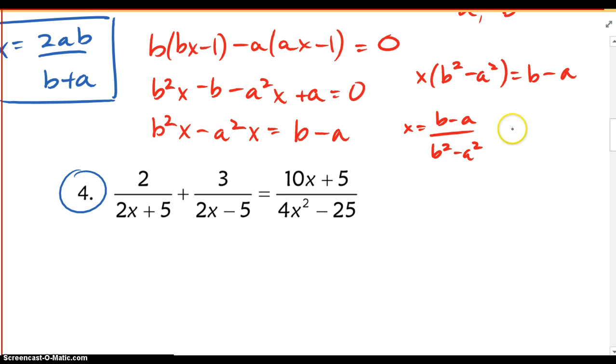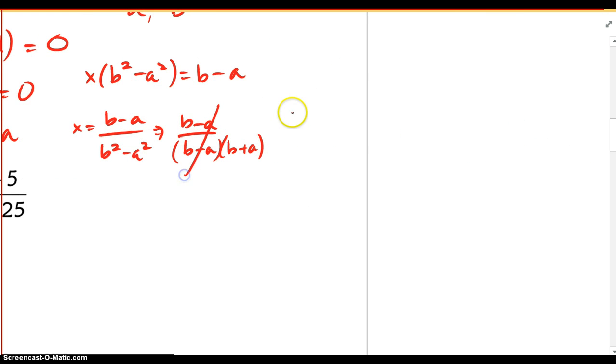And I don't actually want to stop here, because if I notice this, I can actually factor this difference of squares. So I'm left with b minus a over b minus a times b plus a. So I now factor and cancel those common factors, and I'm left with 1 over b plus a.